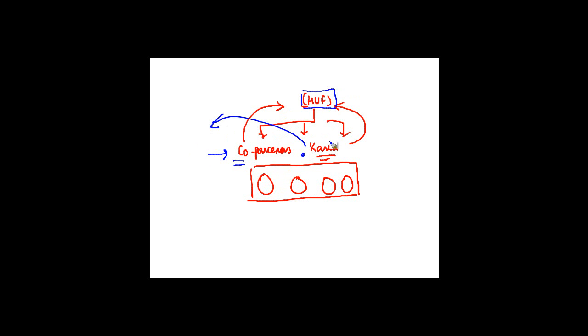So if there is a total partition, obviously all these assets are going to be distributed among various co-parsons and karta. But if there is a partial partition which means that let's say out of four members one said I want to go out, so we gave him one of these assets.